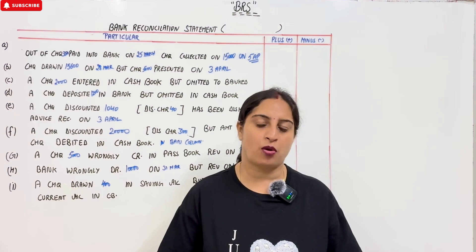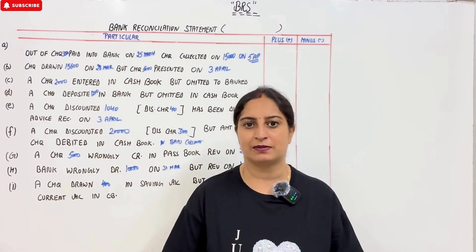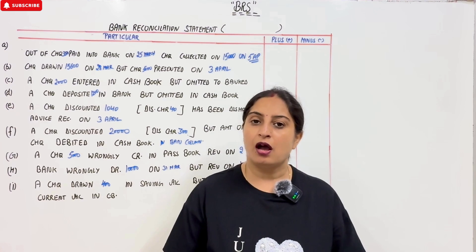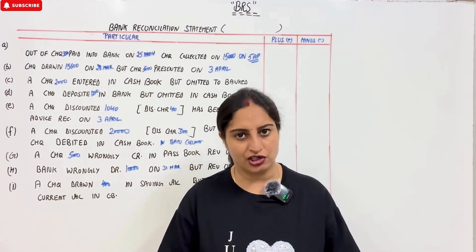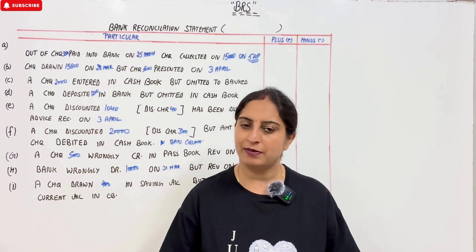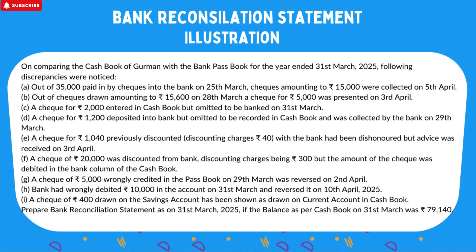When you have a positive balance of the cash book, we are looking at our matching passbook. We are looking at the next illustration on the screen. In comparing the cash book of government, bank passbook for the year ended 31st March 2025. You always have a cash book or a BRS matching it. It is month-wise, and it is 31st March.